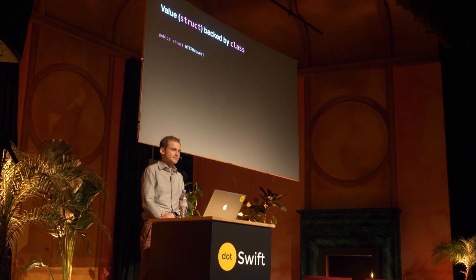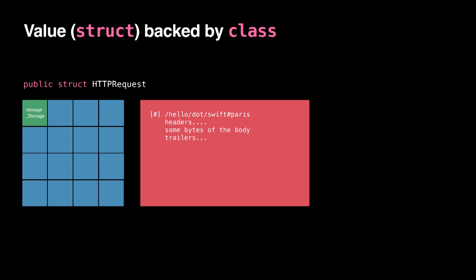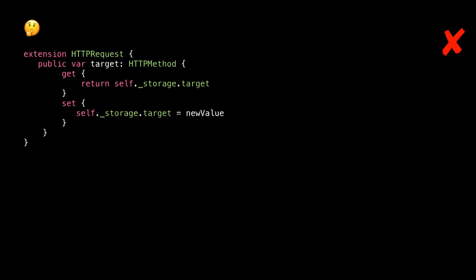So we want a struct HTTP request, because that's the semantics we want, but we want the copying at runtime to look like the class. Can we achieve that? Yes, we can. Step one is simple: we create a struct HTTP request as before, and move all the stored properties into an inner class we call _Storage. The underscore signals it's just a container. At this point, our struct HTTP request is useless — it has no accessible properties and can't even be constructed. That's step one.